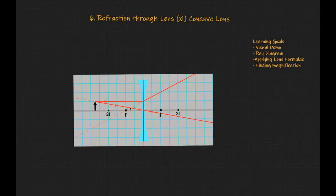Welcome to this video on refraction through lens. In this video we look at the concave lens. So we know that the concave lens is a diverging lens.